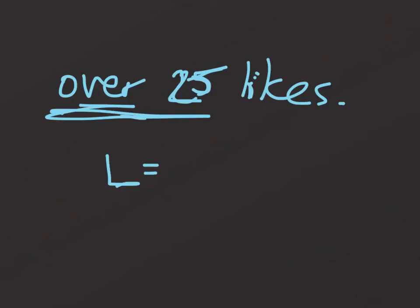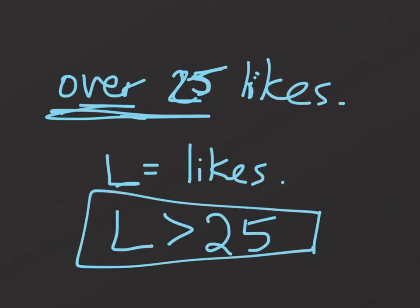To write this as an inequality, let's call L the amount of likes. So, my likes has to be greater than, because it's got to be more than 25. Likes is greater than 25. Notice that I'm not making it greater than or equal to, because it does have to be over 25.